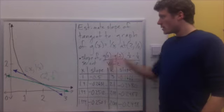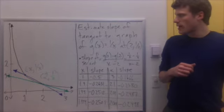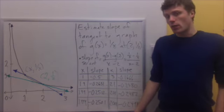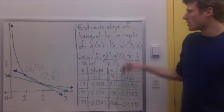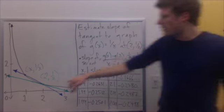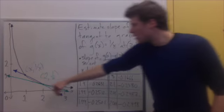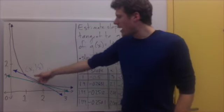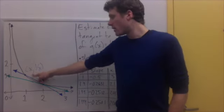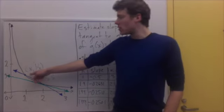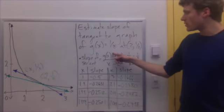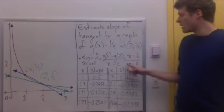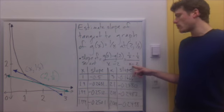Let's do another example. This time, let's estimate the slope of the tangent line to the graph of g of x equals 1 over x. This black curve is a hyperbola — y is equal to 1 over x. We're going to find the slope of the tangent at (2, 1/2), this green point right here. The secant line will go through (2, 1/2) and another point on the graph (x, 1/x), illustrated by this blue line. We'll take its slope, given by g of x minus g of 2 over x minus 2, which is 1 over x minus 1/2 over x minus 2.